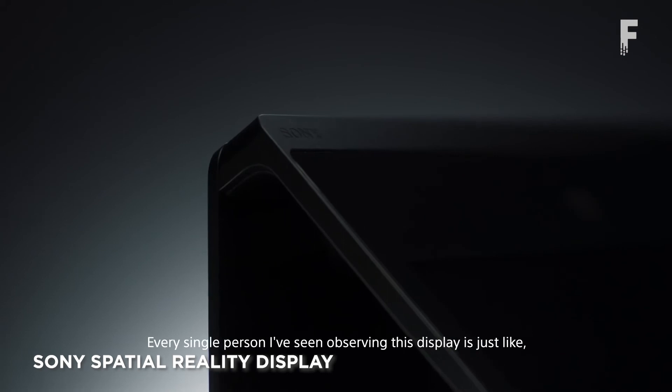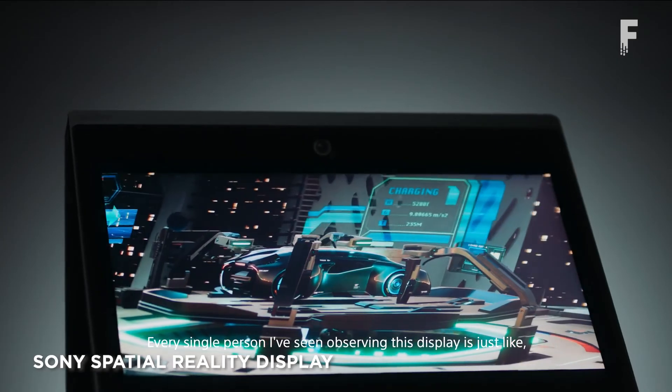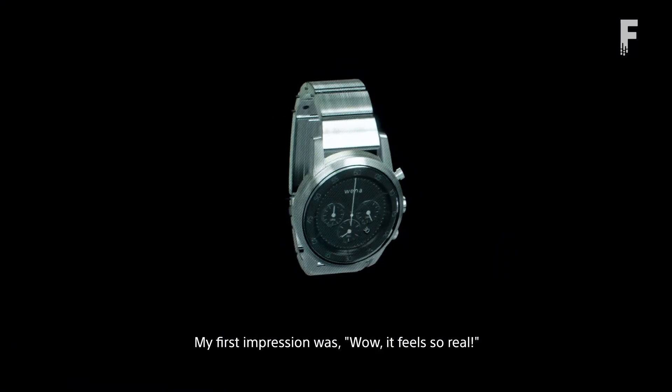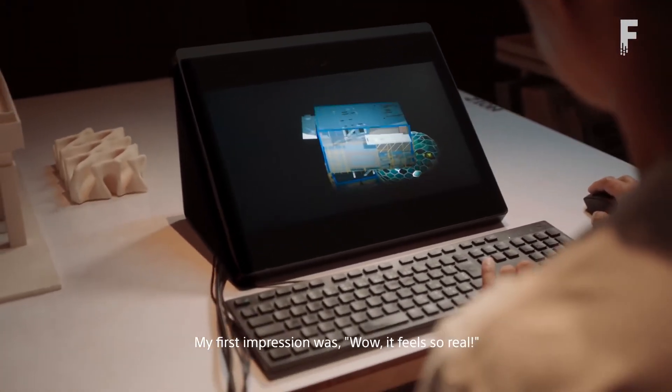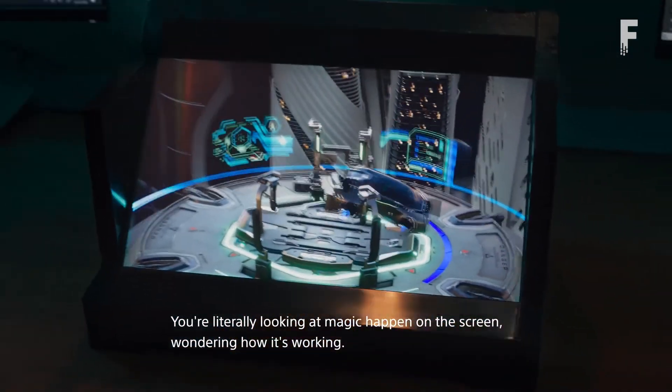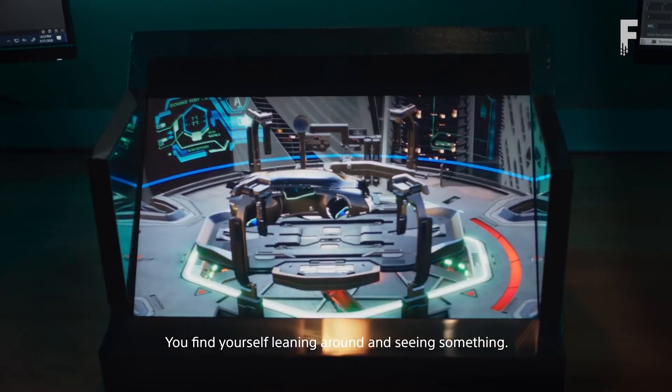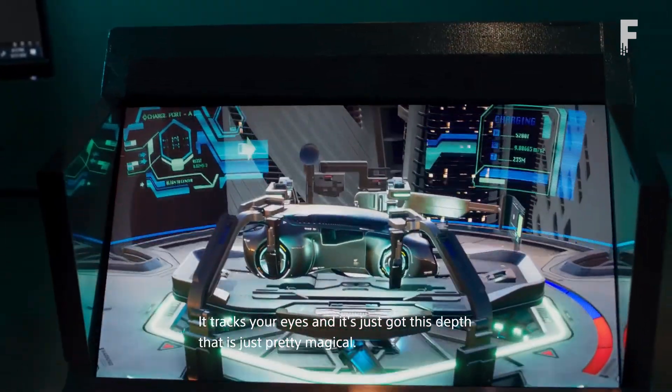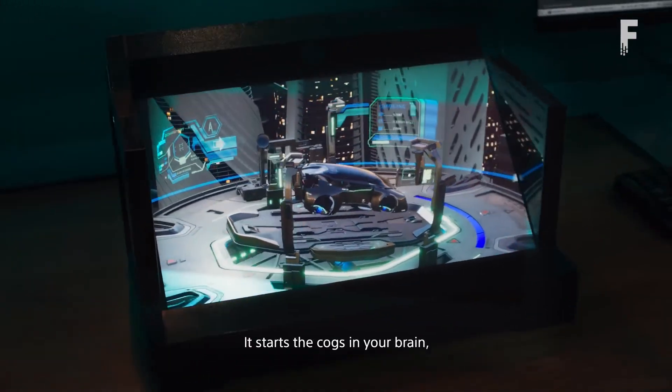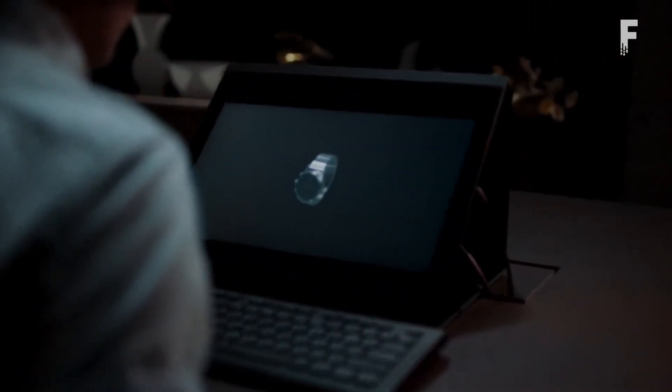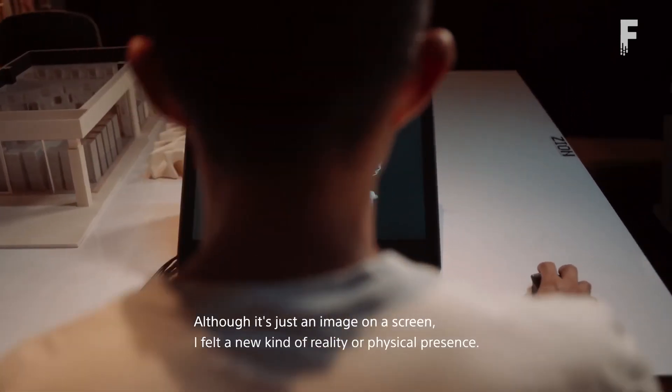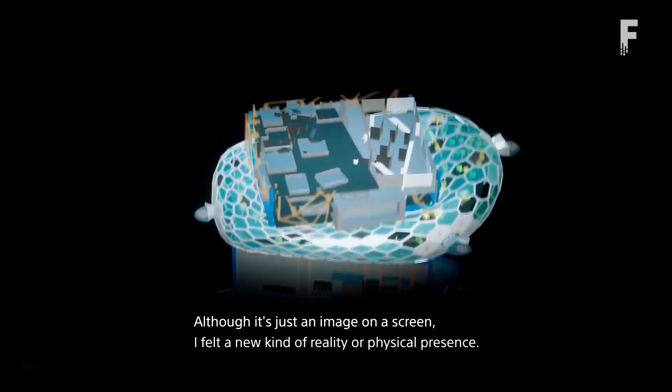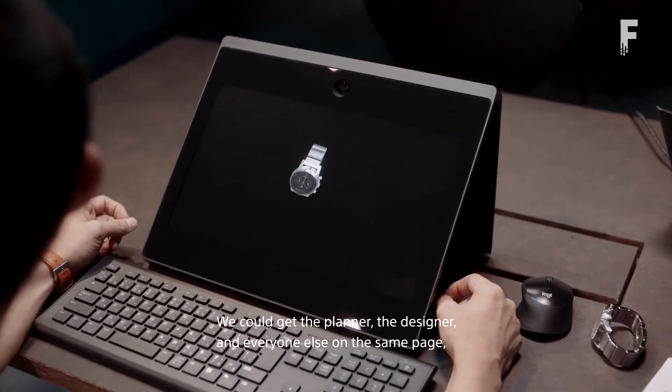Sony Spatial Reality Display is a 3D display that uses eye tracking technology to render believable 3D objects, without the need to wear 3D glasses or put on a VR headset. It's made up of a 15.6-inch 4K LCD, a high-speed vision sensor that tracks eye movement as well as your position as you walk around the display, and a micro-optical lens that's layered over the LCD and divides the screen for your left and right eyes to create a stereoscopic image.